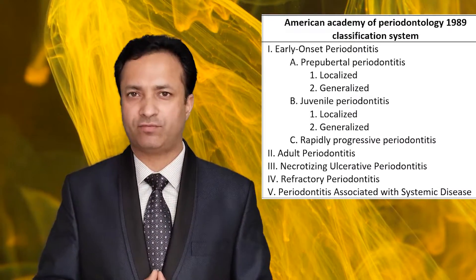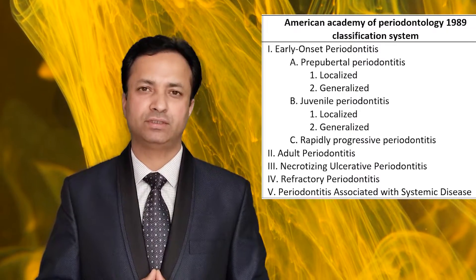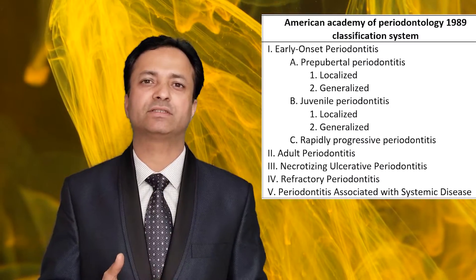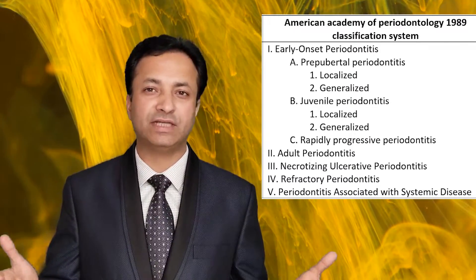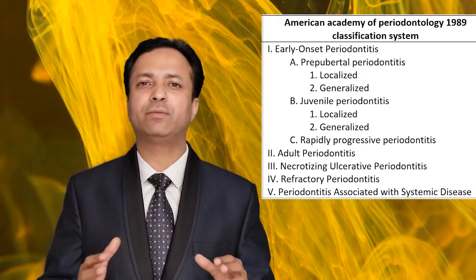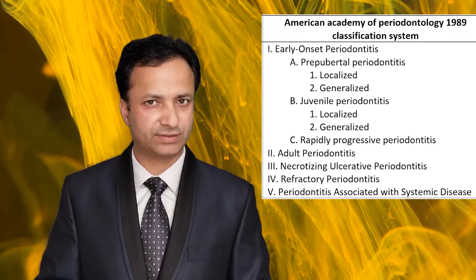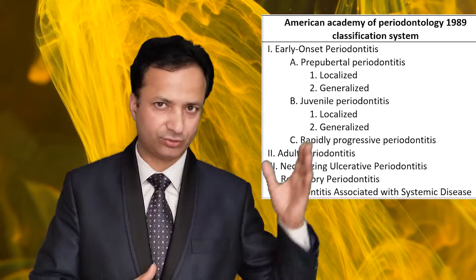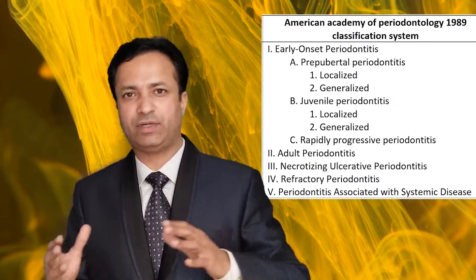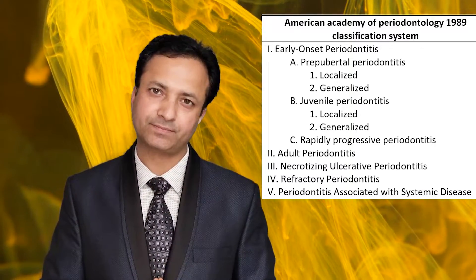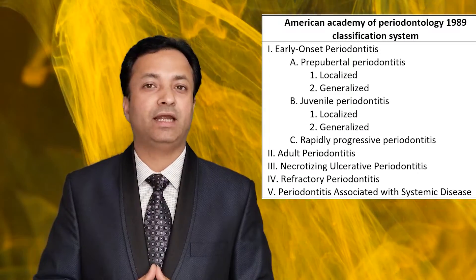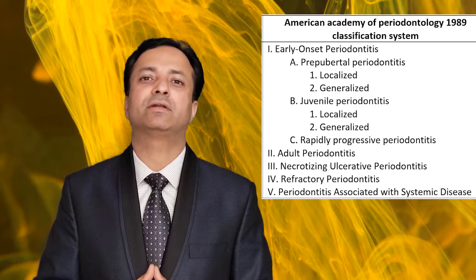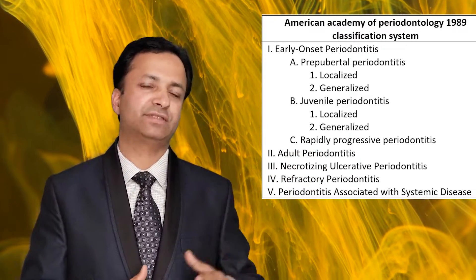The drawbacks of the 1989 AAP classification system were: first, it was heavily dependent on the age of the patient; second, there was no category describing gingival diseases; third, there was considerable overlap between categories — for example, a juvenile periodontitis patient could easily be classified as rapidly progressive periodontitis; fourth, refractory periodontitis cases were not clearly defined; and fifth, the systemic diseases in the last category were not clearly defined.